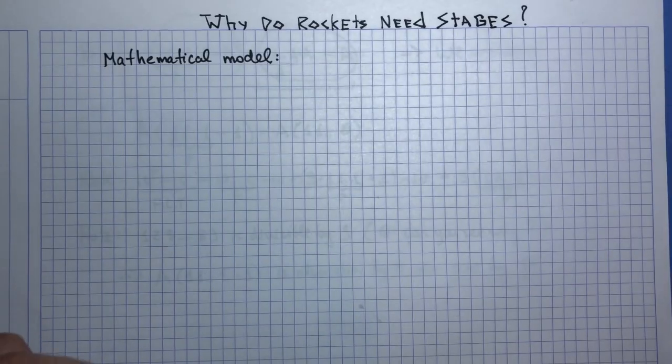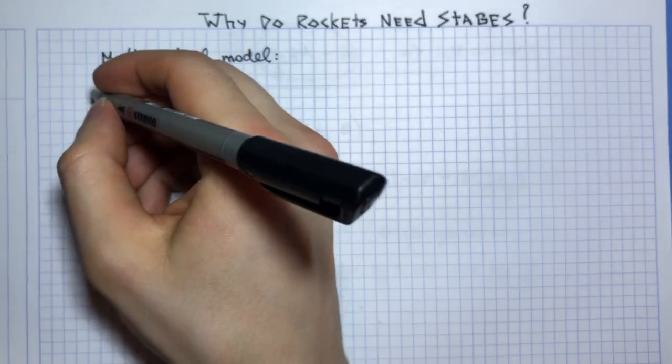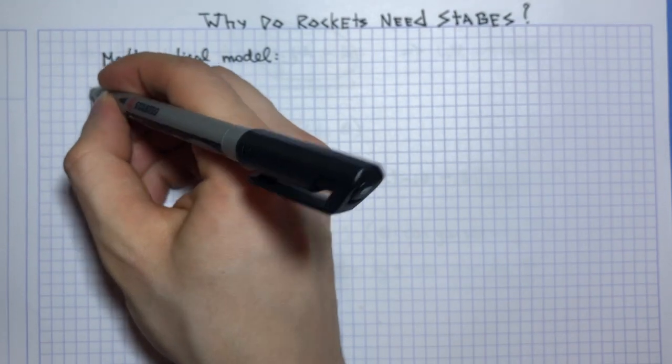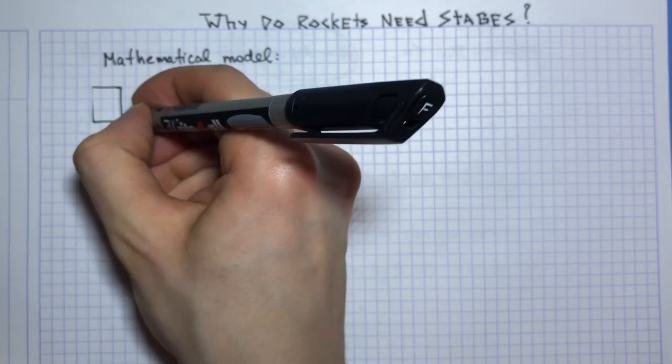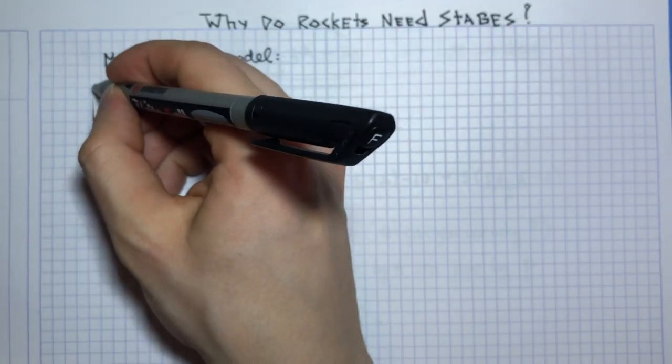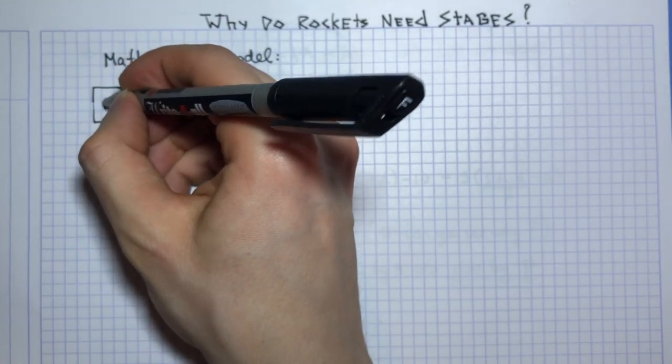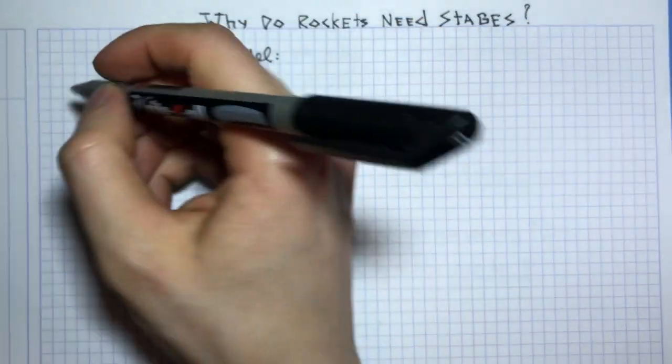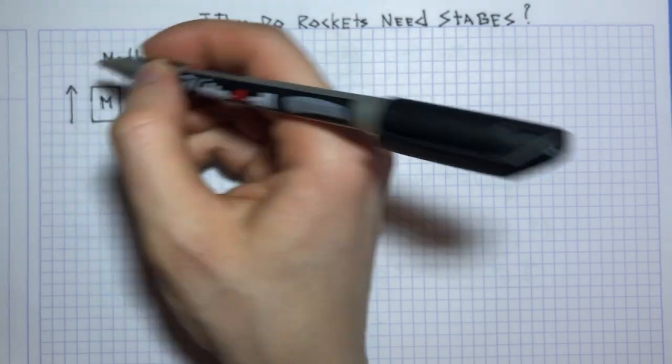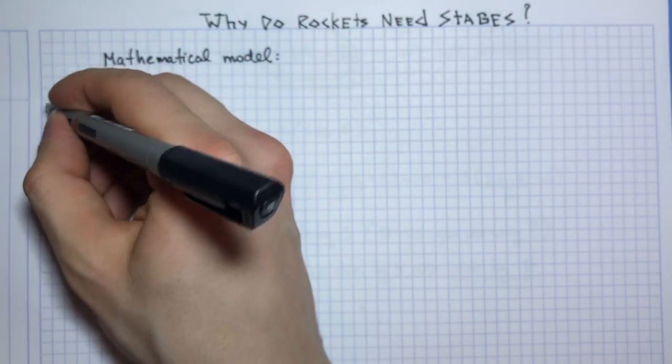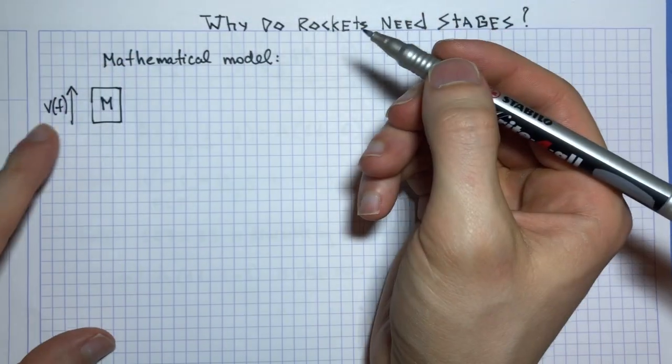So we need to construct a mathematical model. Initially we have a rocket that I draw as a rectangle of mass M that travels upwards at a speed v(t). So it happens at time t.